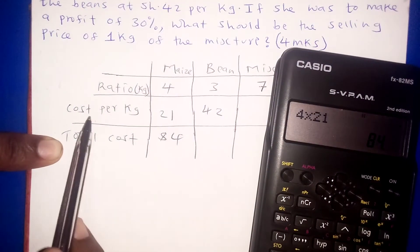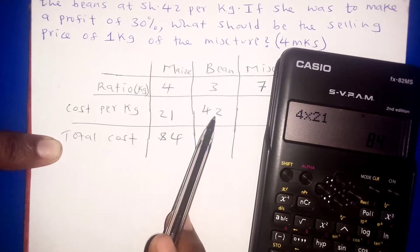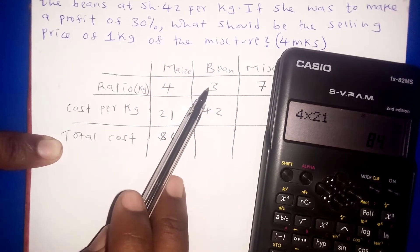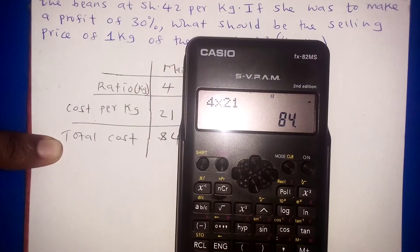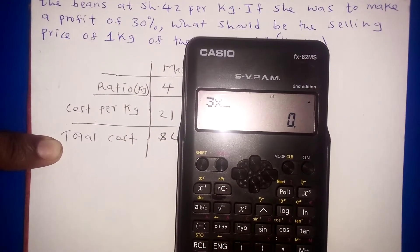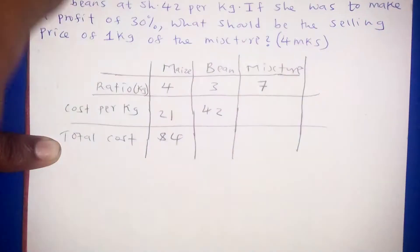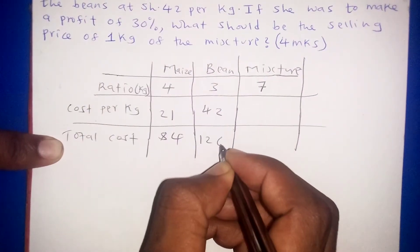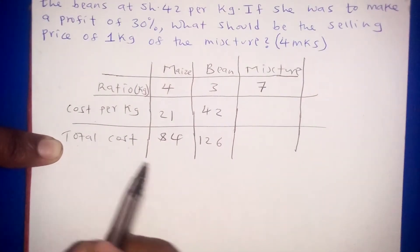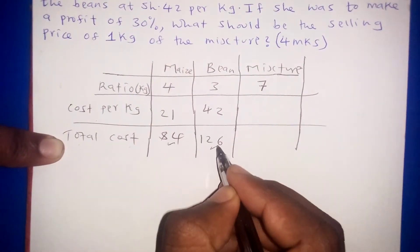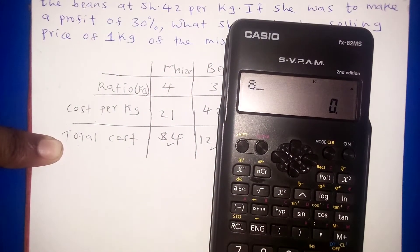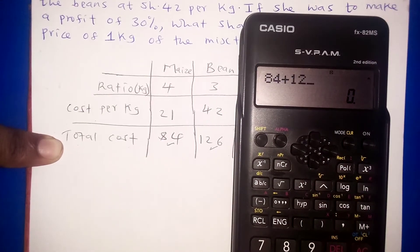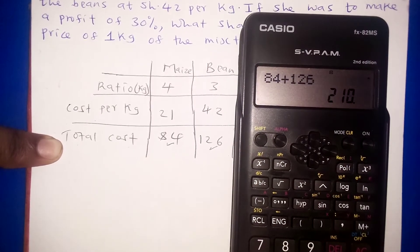For beans: if 1 kg costs 42 shillings, what about 3 kg? So 3 multiplied by 42 gives 126 shillings. The total cost of the mixture is then 84 plus 126, which equals 210 shillings.